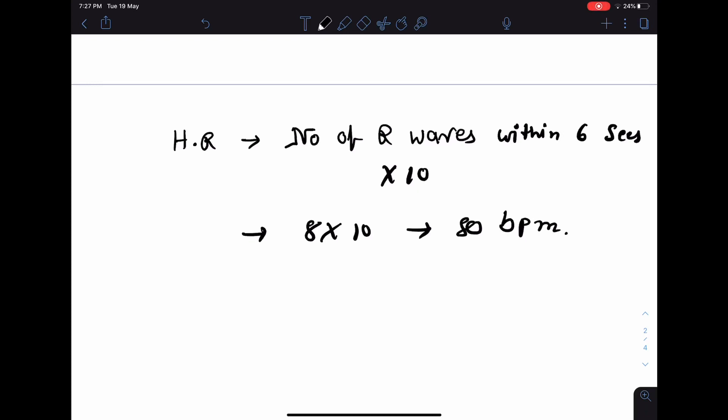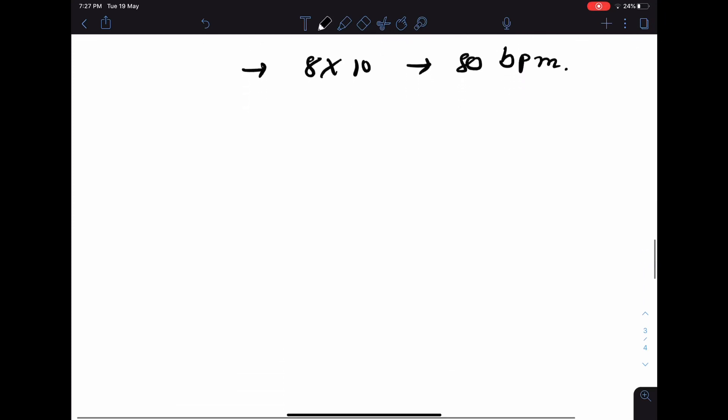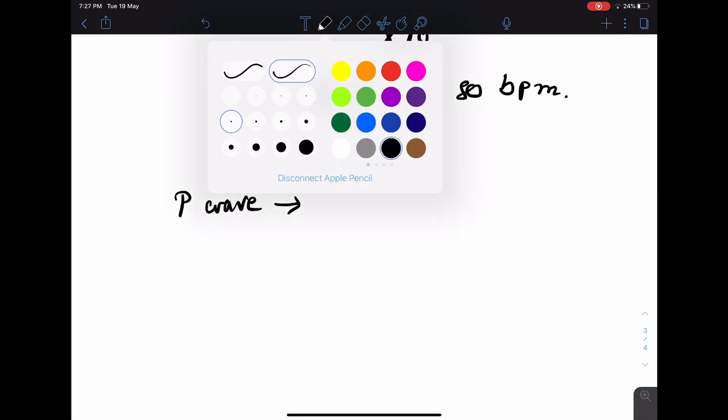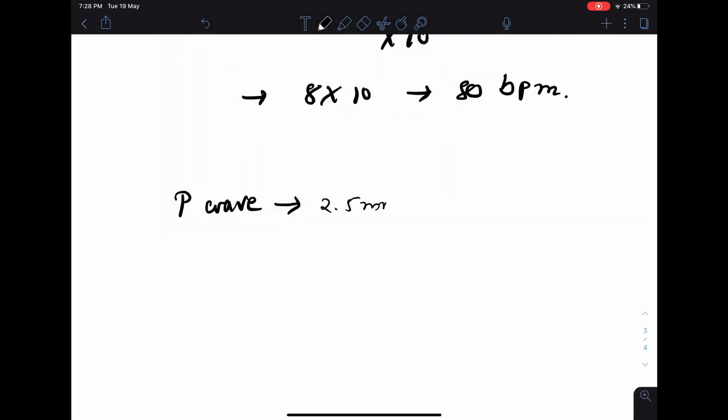So after commenting on heart rate and the rhythm, now we should be commenting on each waves and segments. P wave: the normal duration of P wave is 2.5 mm, that is up to 0.1 second. That is actually the maximum duration of P wave. The maximum amplitude of P wave is also 2.5 mm.